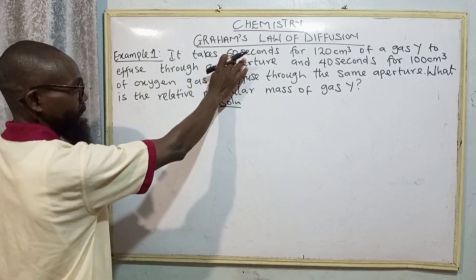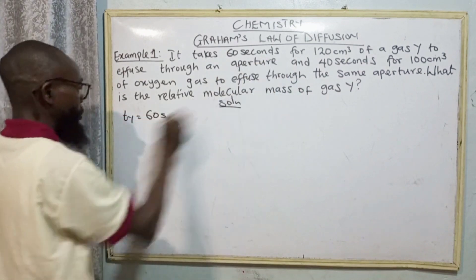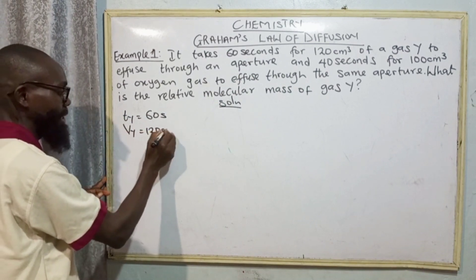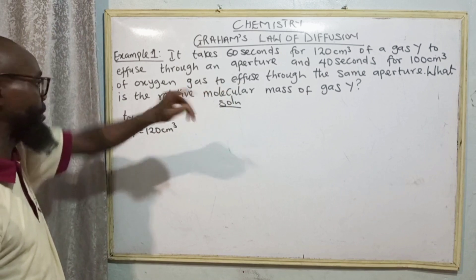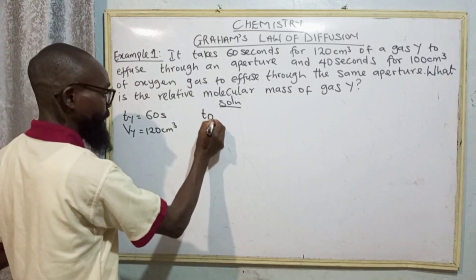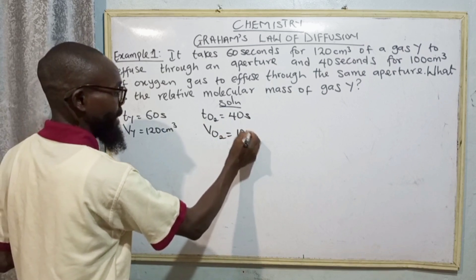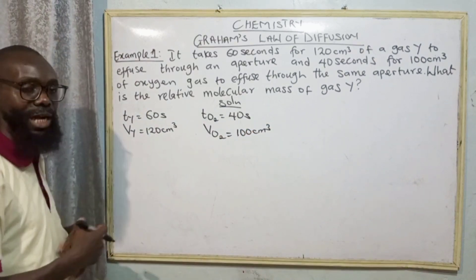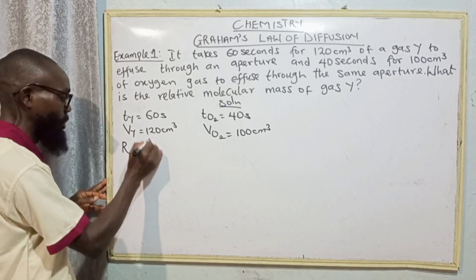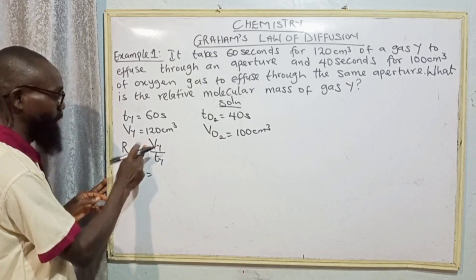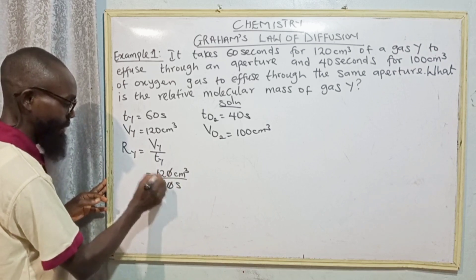Time of Y is 60 seconds and the volume of Y is 120 centimeter cube. Also, 40 seconds for 100 cm cube of oxygen. Time of oxygen is 40 seconds. The volume of oxygen is 100 centimeter cube. Here we need to calculate our rates of diffusion. The rate of Y equals volume of Y over time of Y. Volume of Y is 120 centimeter cube, time of Y is 60 seconds. So we have 2 here.